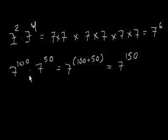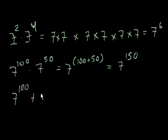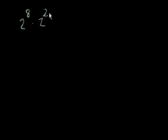I want to give you a little warning: make sure that you're multiplying. Because if I had 7 to the 100 plus 7 to the 50, there's actually very little I could do — I couldn't simplify that expression. But if I had 2 to the eighth times 2 to the 20th, we can add the exponents to get 2 to the 28th.